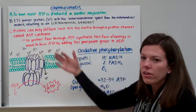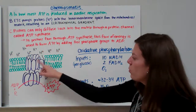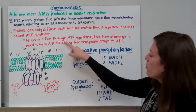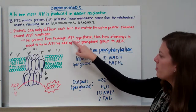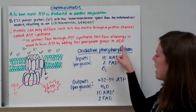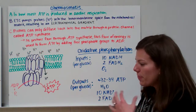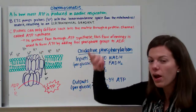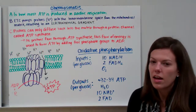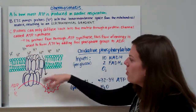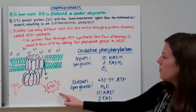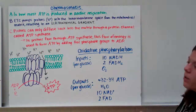As protons flow through ATP synthase, that flow of energy is used to form ATP by adding free phosphate groups to ADP. Think of it like a water wheel — when water passes through the wheel, we take the energy from the flowing water and use it to produce electricity or power something. Similarly, we take the energy from the flowing protons and use it to convert ADP to ATP by adding a phosphate. This is chemiosmosis, the final portion of oxidative phosphorylation.